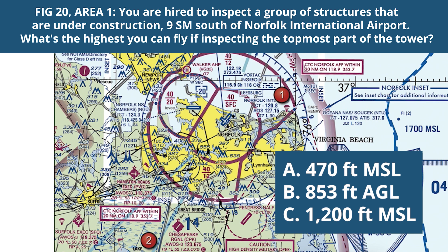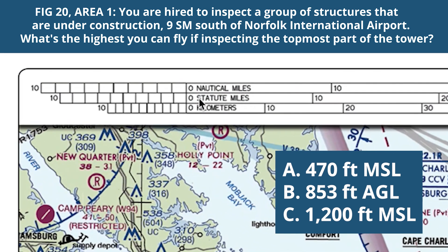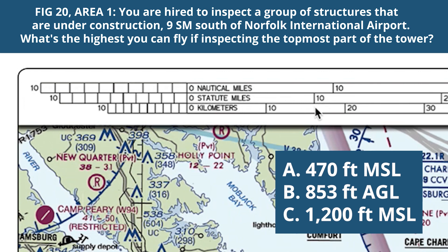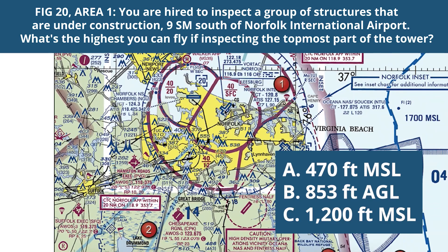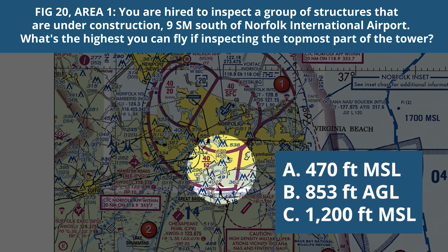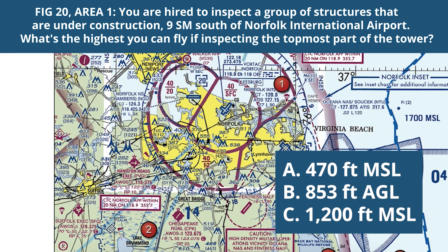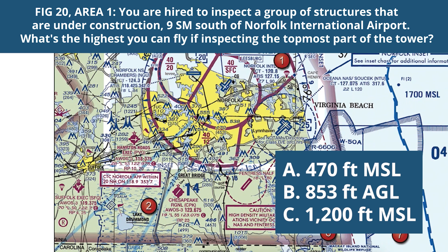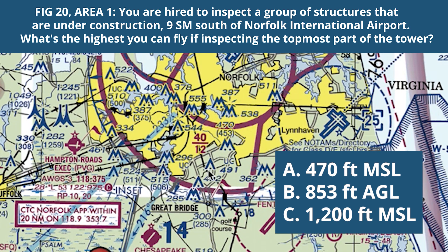We are looking at the most challenging questions that won't show up until you're two-thirds or three-fourths of the way through our course. We found the airport icon and we've got to go nine statute miles south. The FAA gives us a nice little reference here — the middle row is about 10 statute miles, so let's eyeball nine statute miles south. We are looking for a group of structures that are under construction. This group icon here represents a group, versus a single pyramid icon for a single structure. The group of structures under construction is marked right here on the chart.